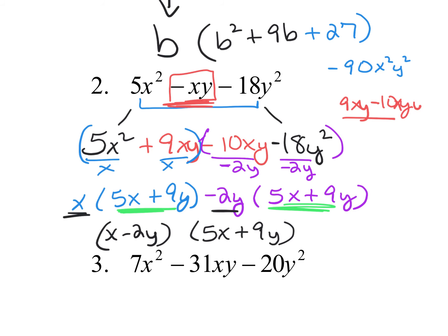For number 3, you do the same way — multiply to get negative 140 and look for those factors that give you 31. Or you could do guess and test: factors of 7 and factors of 20 until you find the one that works.